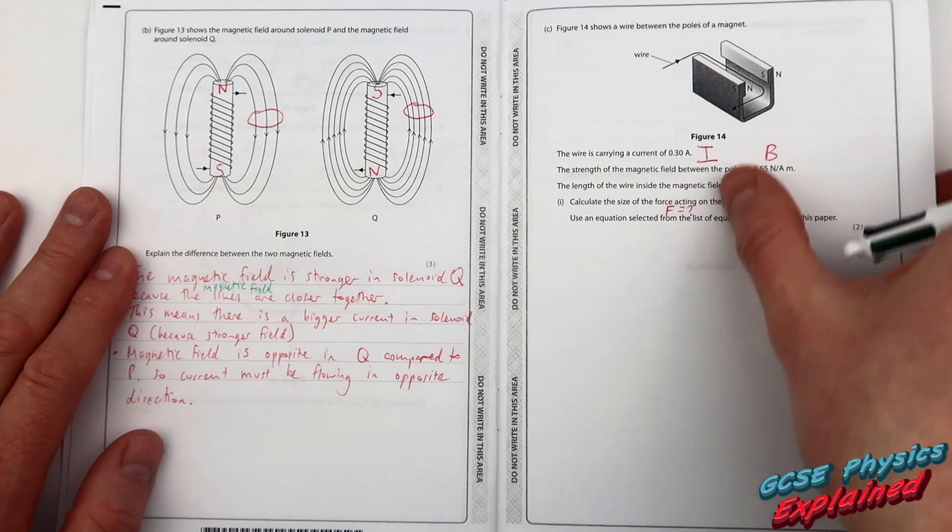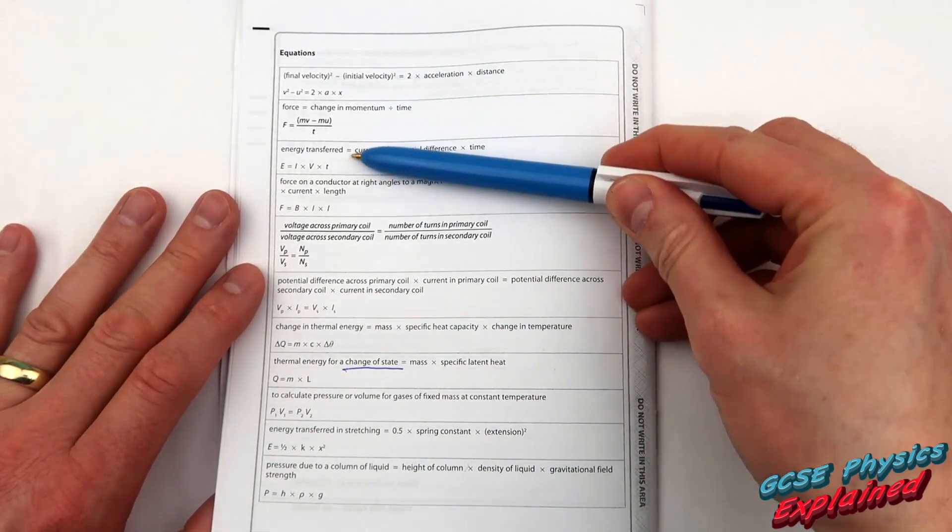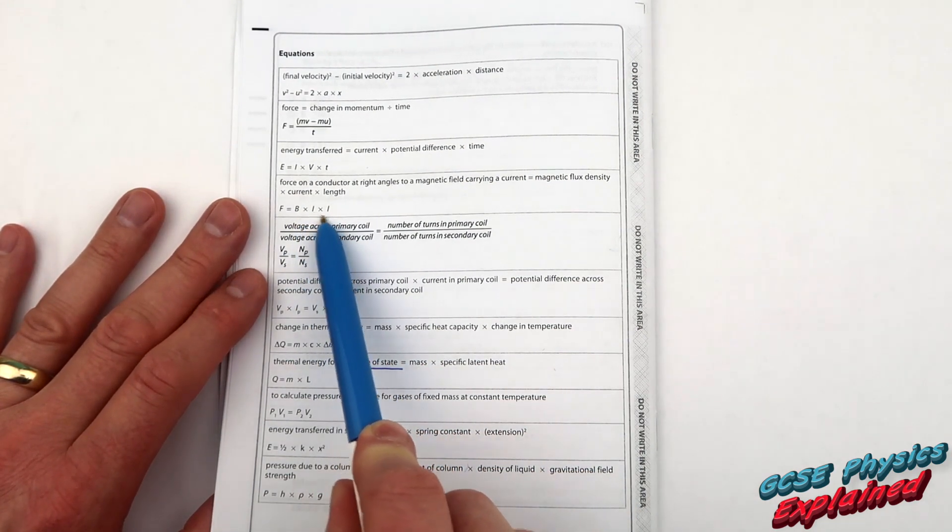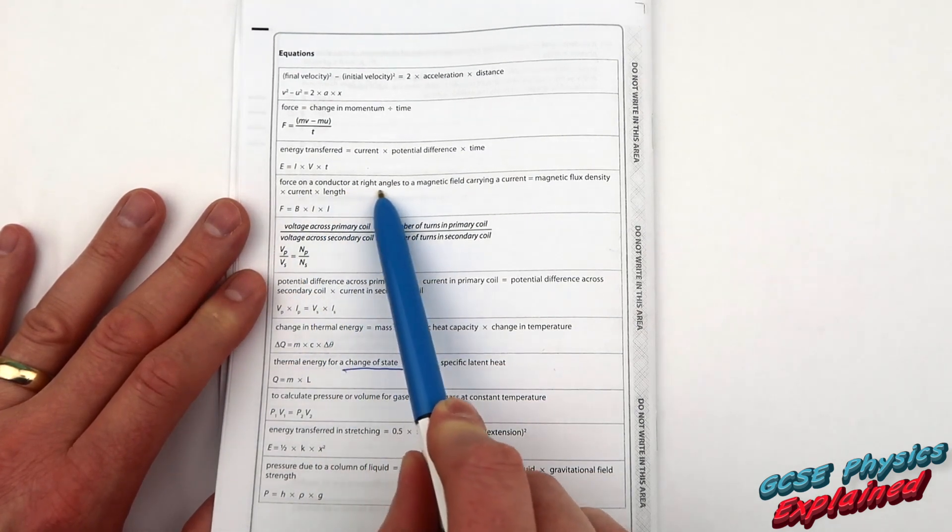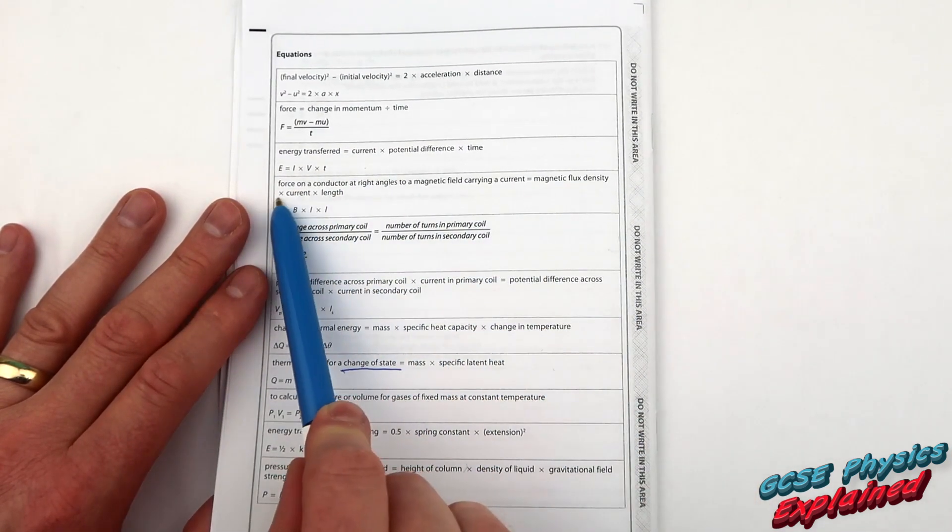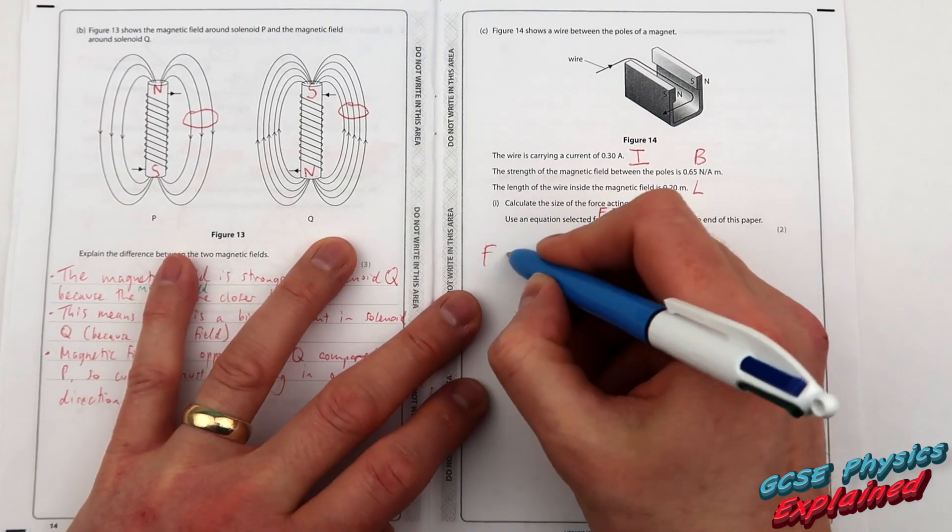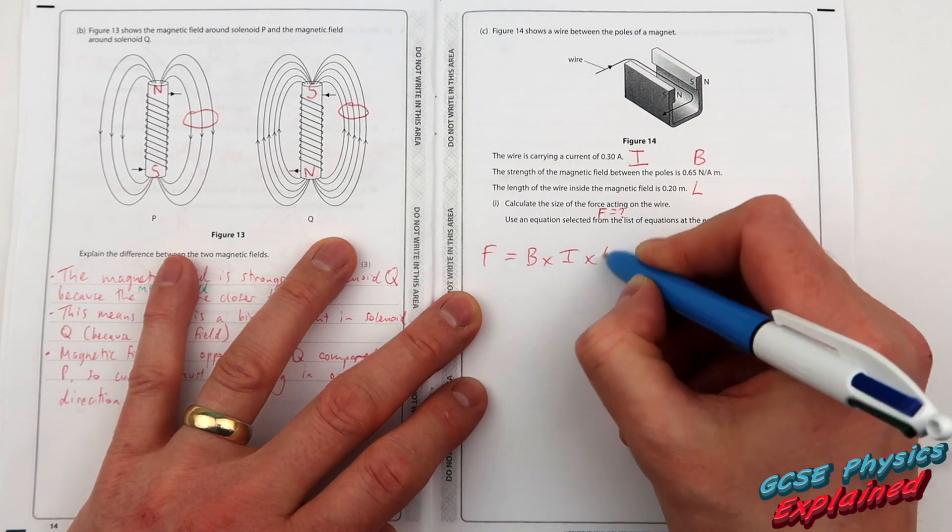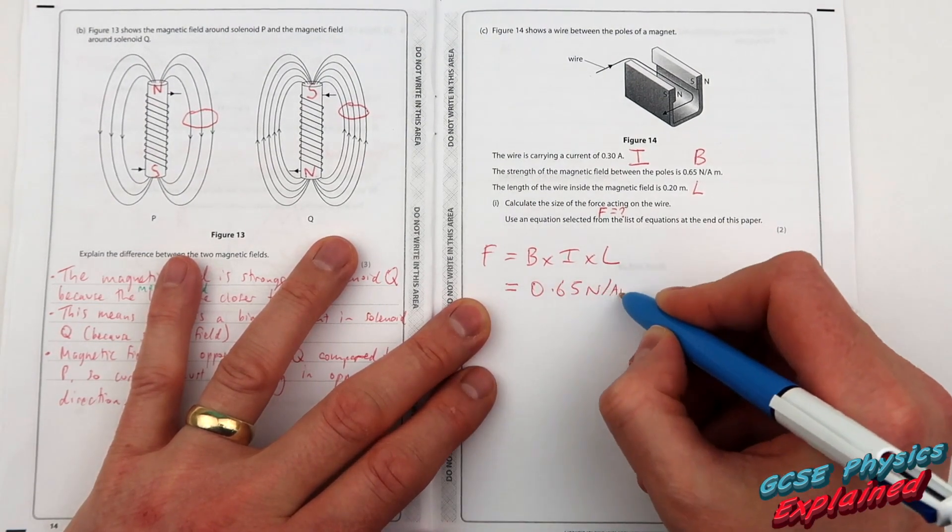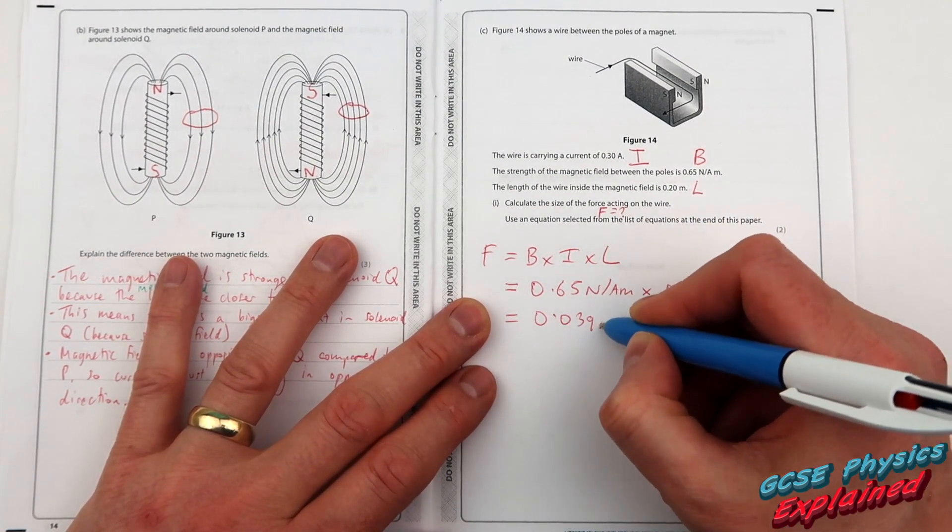So we're looking for something that's got F, B, I and L in. There we go. F equals B, I, L. Force on a conductor at right angles to a magnetic field carrying a current equals magnetic flux density or magnetic field strength times by the current times by the length. And we don't need to rearrange it so let's just pop the numbers in. And that equals 0.039 and that'll be newtons.